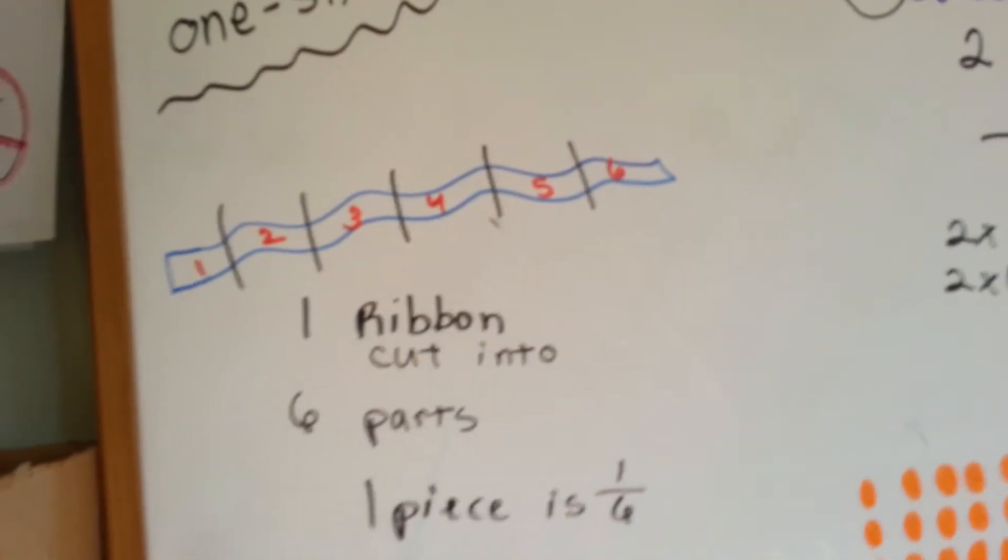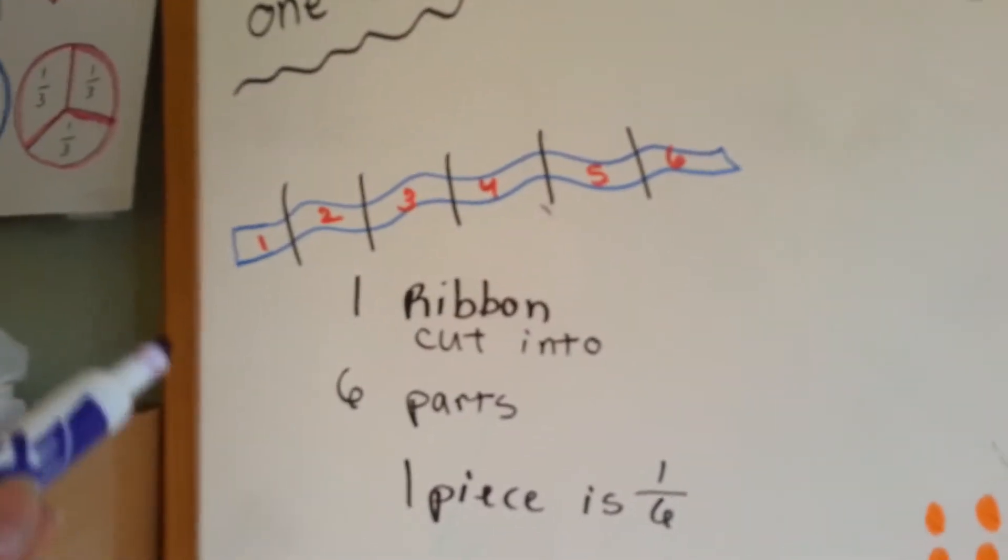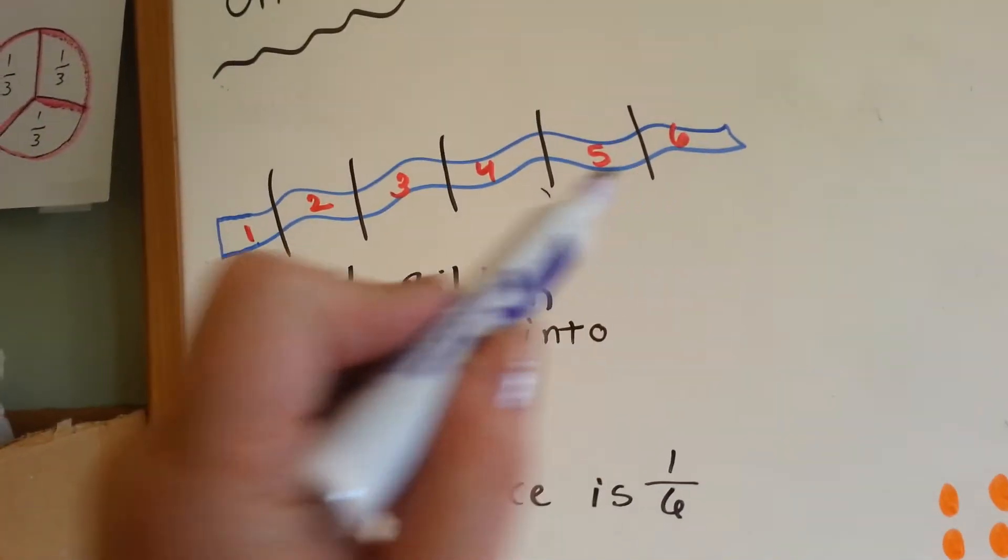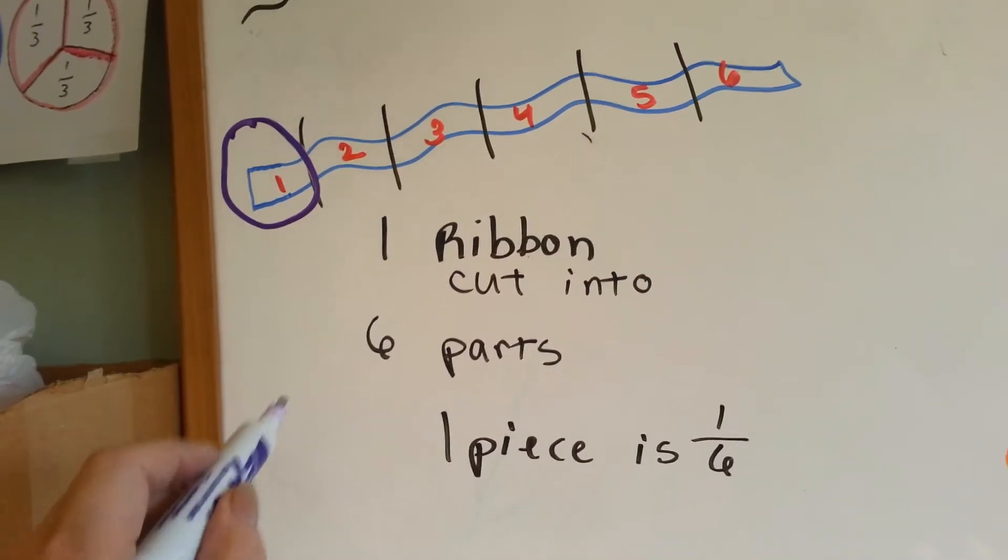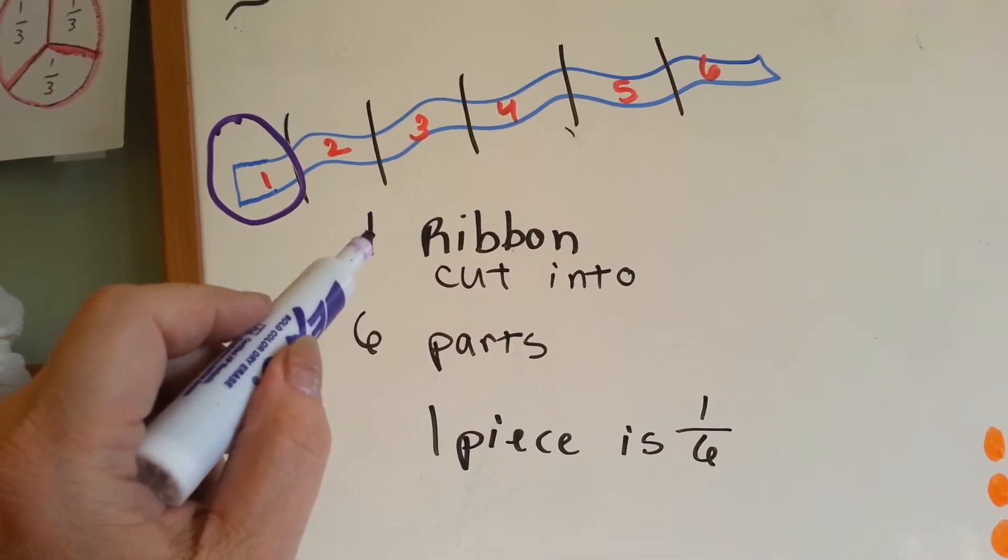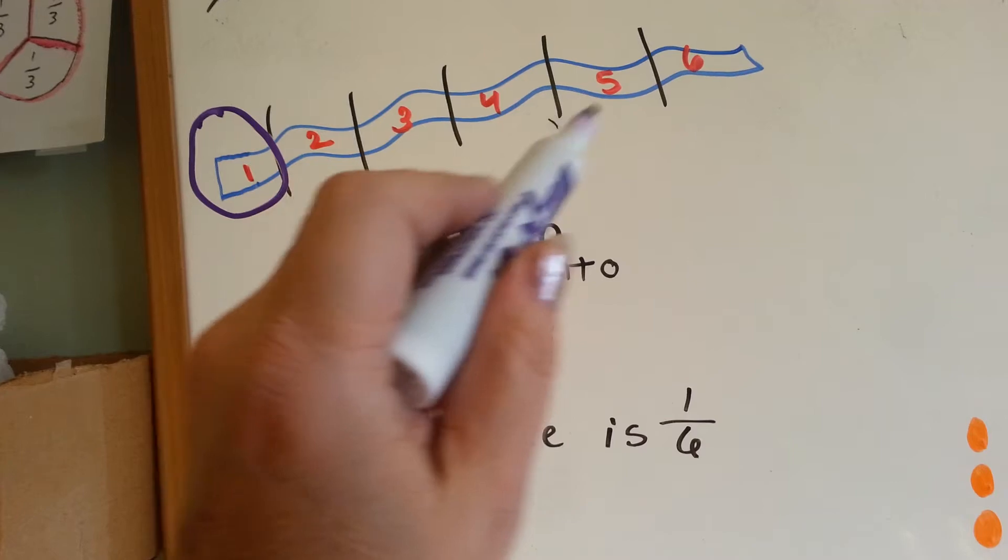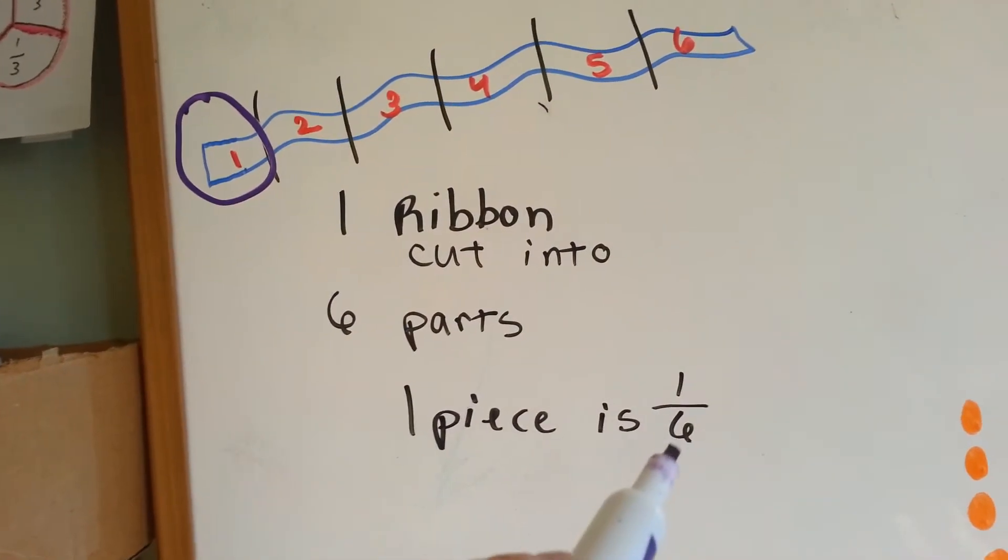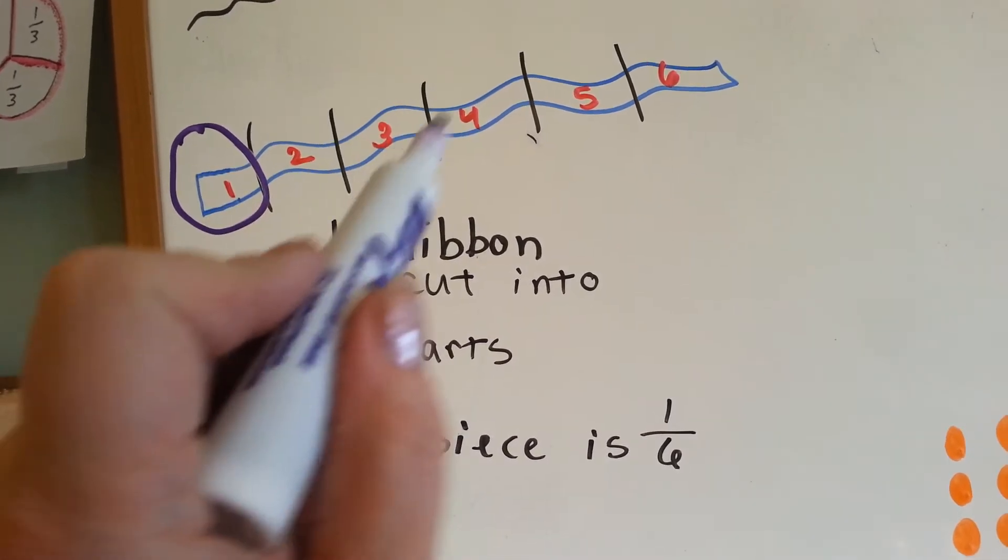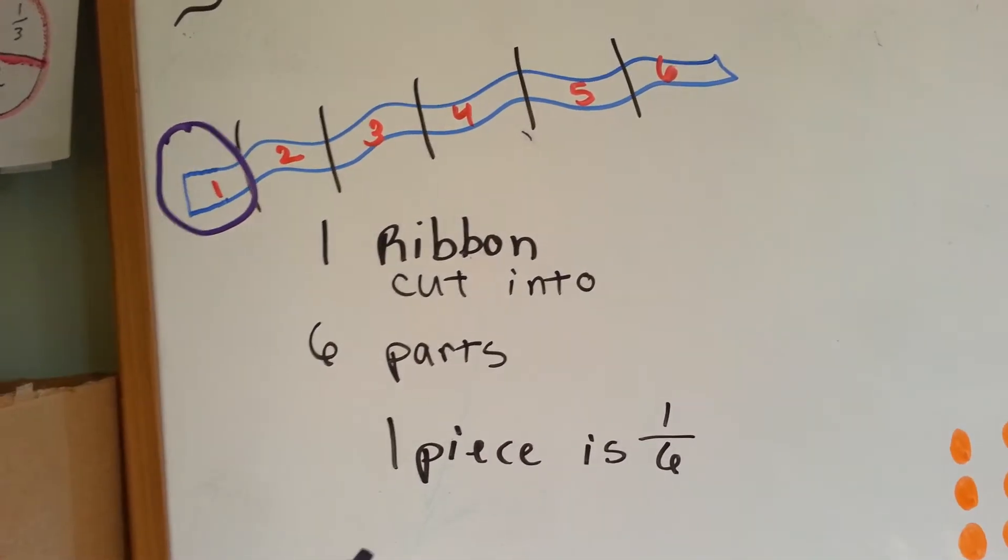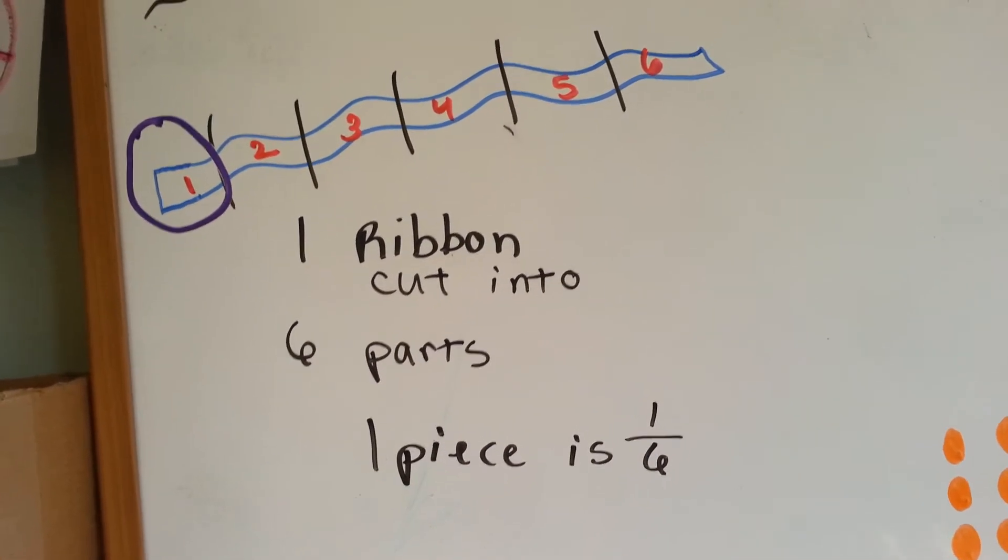So here we have a ribbon that is cut into six pieces. If you had one of these pieces, you would have one piece of the six parts and you would have one-sixth. It's broken into six pieces and you get one of them, you have one-sixth of the ribbon.